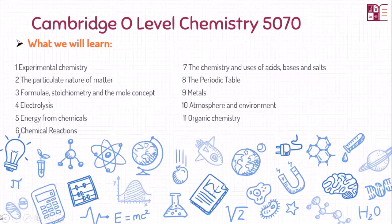After experimental chemistry, we are going to start with the particulate nature of matter, then come to the moles — the most confusing and difficult topic, with a harder difficulty level that students find very hard. Next is electrolysis, then energy from chemicals, chemical reactions, acid bases and salts, the periodic table, metals, the atmosphere and environment, and finally the last and lengthiest topic: organic chemistry.